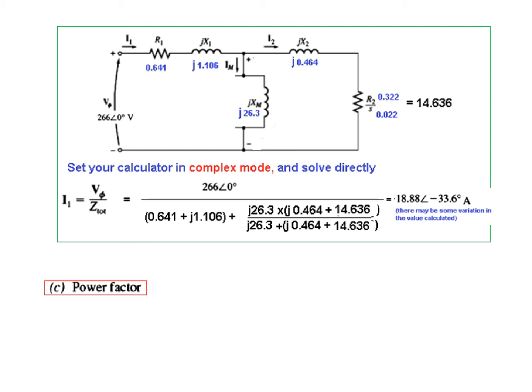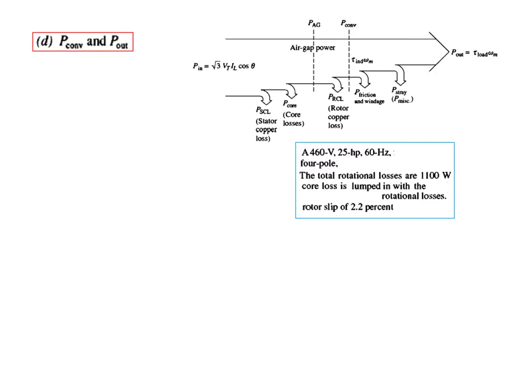Part C is the power factor. The power factor is cos θ. From the result, θ = 33.6°, so cos(33.6°) = 0.833, and it is lagging because the sign is negative.